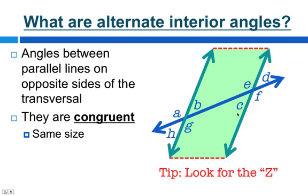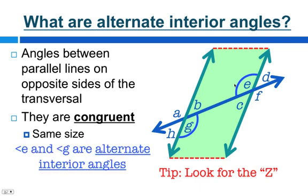We know that B and C are alternate interior angles, but what if we're talking about angle G? Remember, alternate interior is on the inside of the parallel lines, on opposite parallel lines, and on the opposite sides of the transversal. So if we're talking about angle G, then on the opposite side of the transversal on the other parallel line is angle E. So angle E is the alternate interior angle. Angle E and angle G are alternate interior angles, and they are congruent. Again, you can look for the zigzag — follow one parallel line across the transversal to the other parallel line.